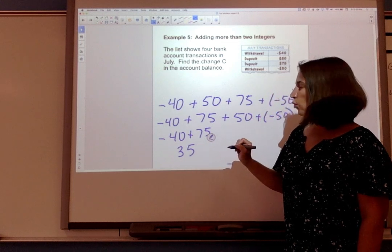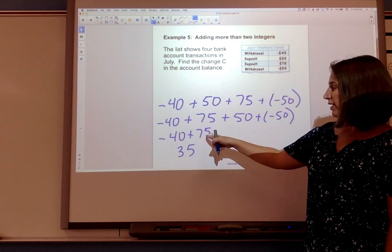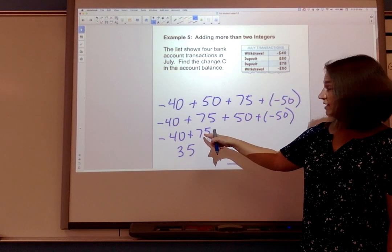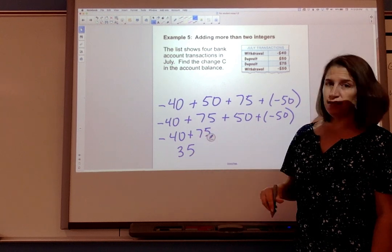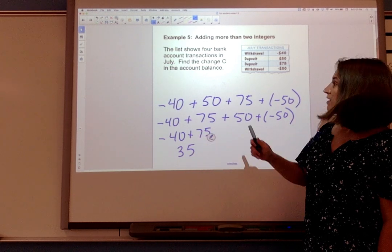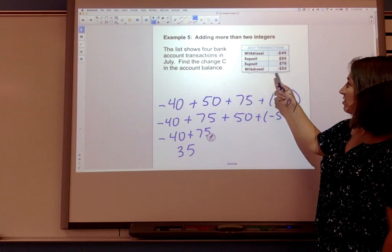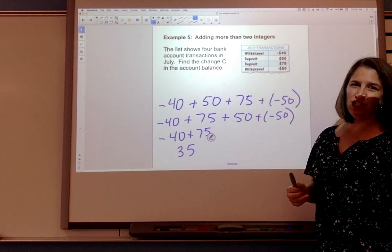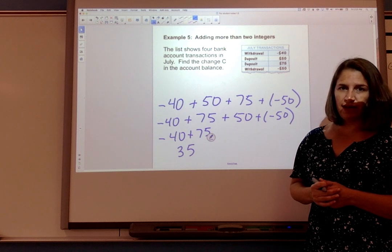And now I need to think which absolute value is greater. This one is 75 which is positive. So my answer is going to be positive. So the change after all of this stuff happened, the change, the net change is that we added $35 to our bank account.